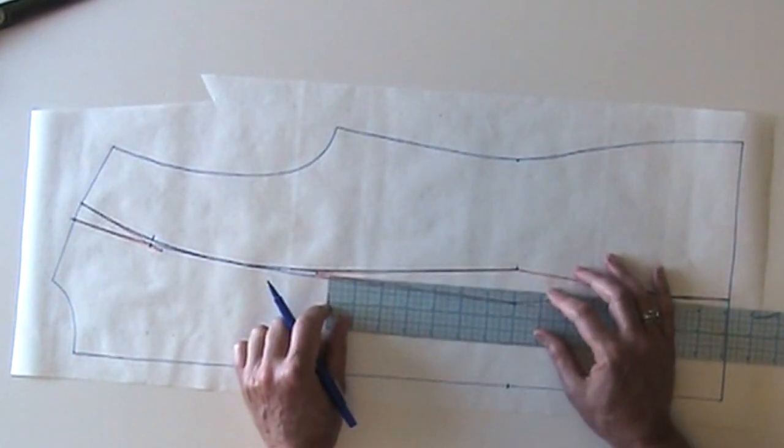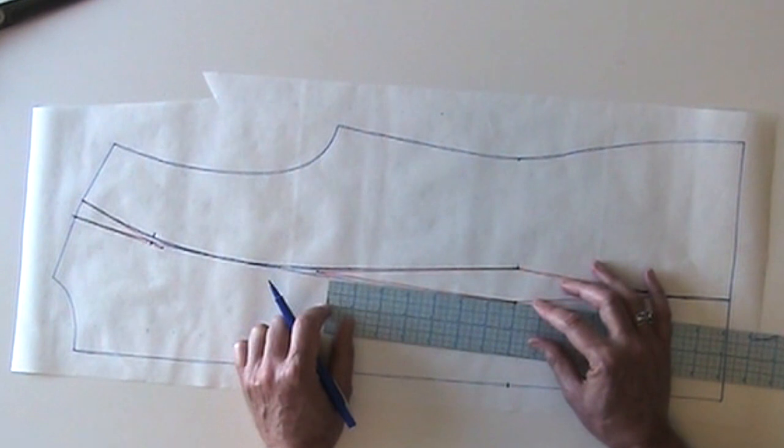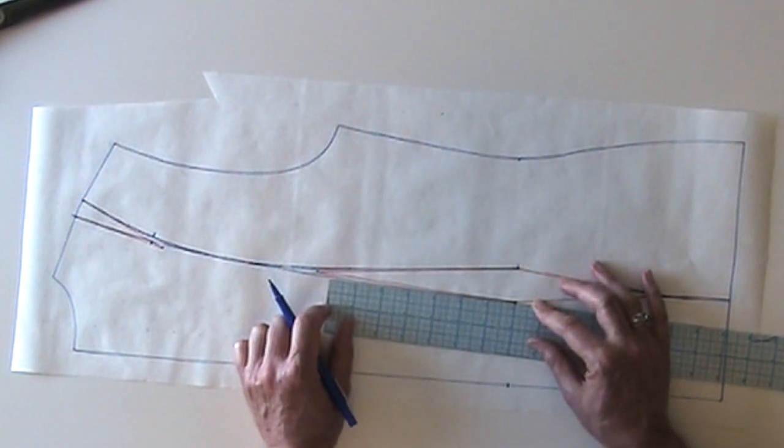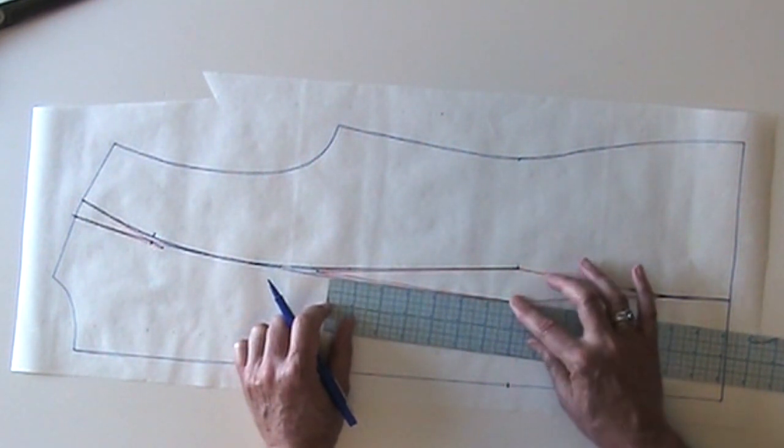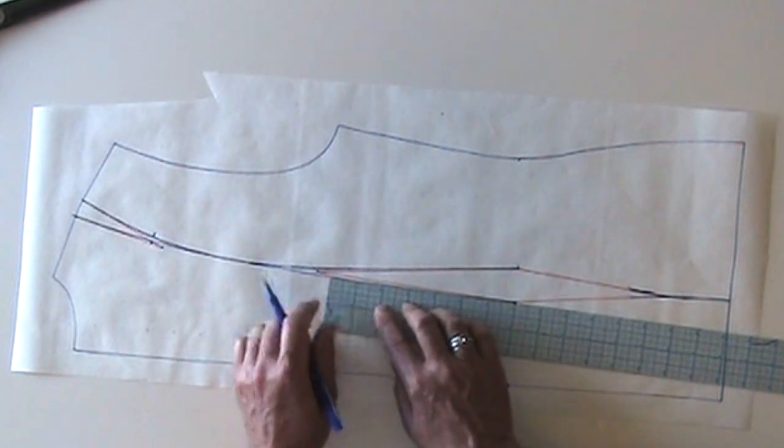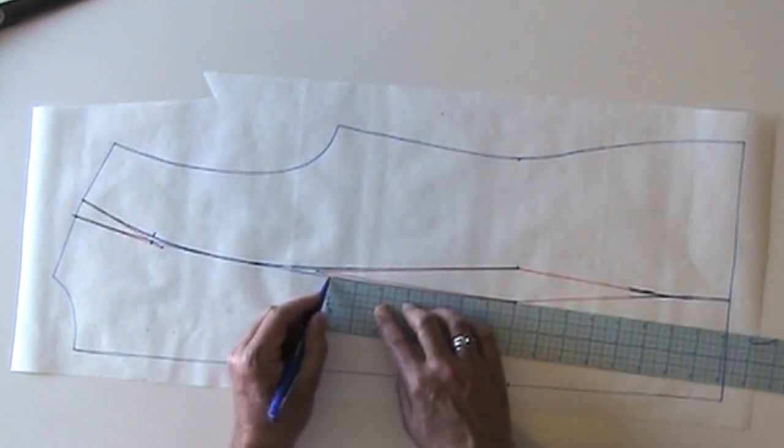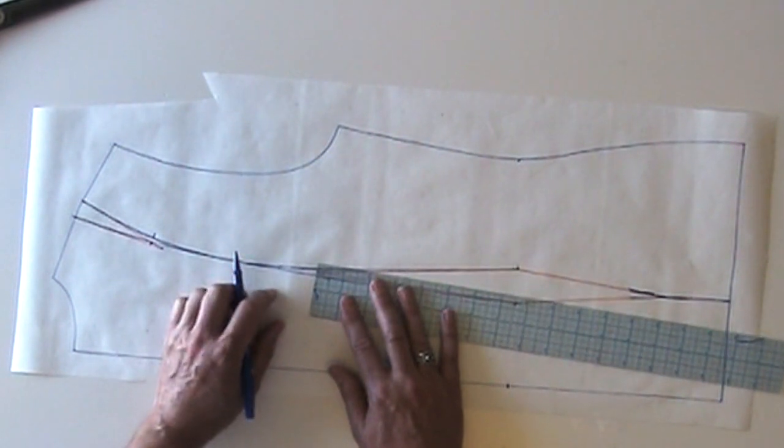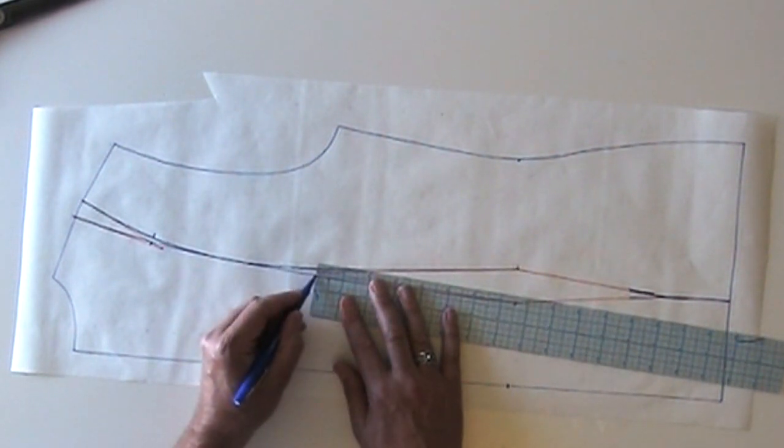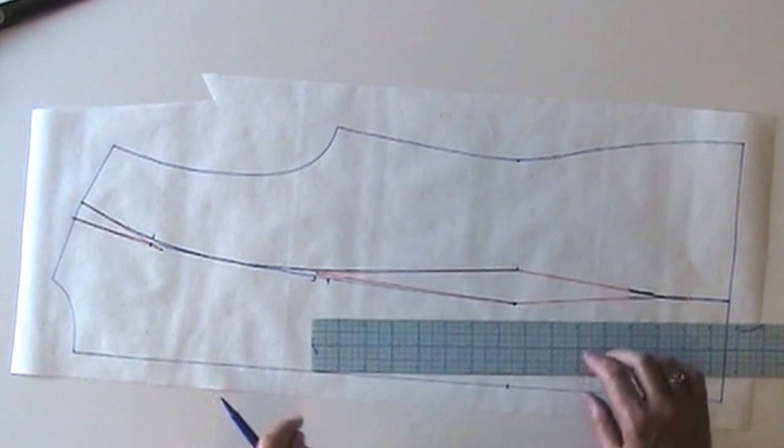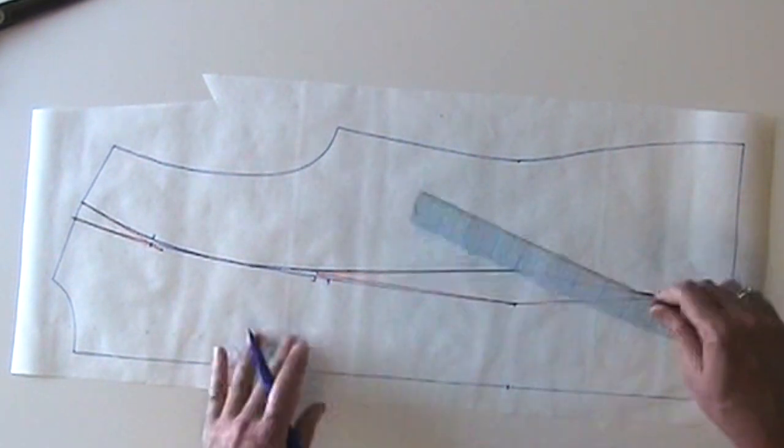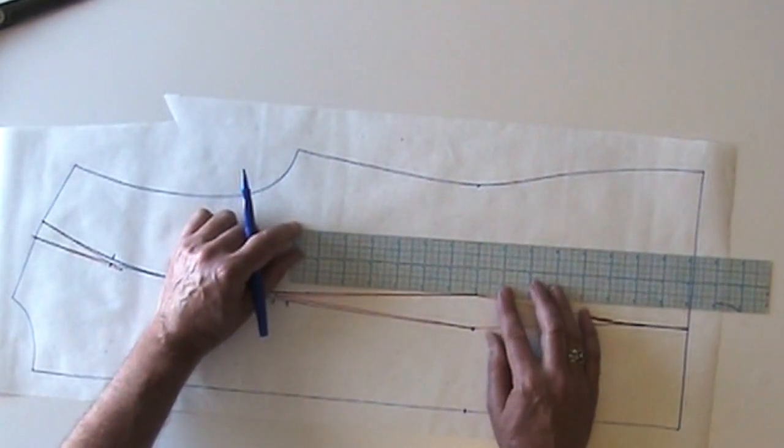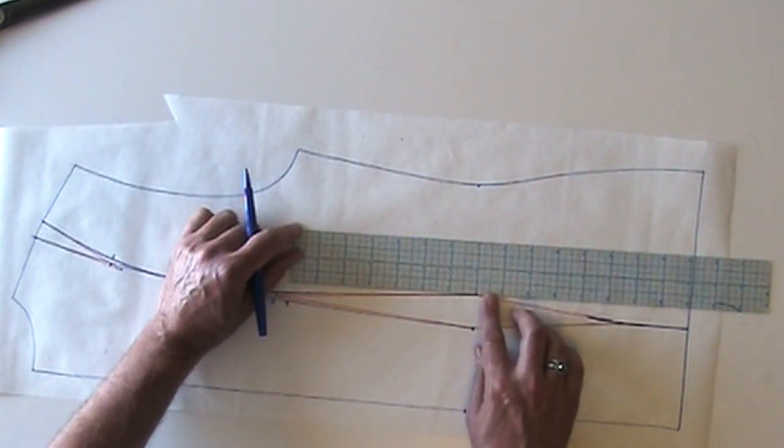And I need a couple more notches down here, a slight distance up from the waist. I'm going to do it seven inches up from the waist. I'm going to add a notch. And because this is my back, I'm going to put another notch a half inch from that one, so a double notch to indicate that this is the back.